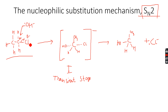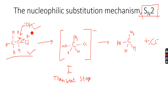OH⁻ attacks the partial positive carbon bonded to chlorine, we get the transient stage, and then ethanol is produced. This is the mechanism for the hydrolysis of halogenoalkanes. The mechanism is called SN2: S stands for substitution, N for nucleophilic. The 2 means the rate depends on the concentration of both the OH⁻ ions and the halogenoalkane — both species affect the rate of reaction.